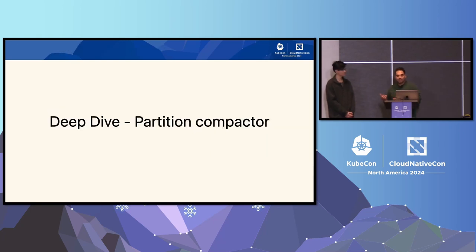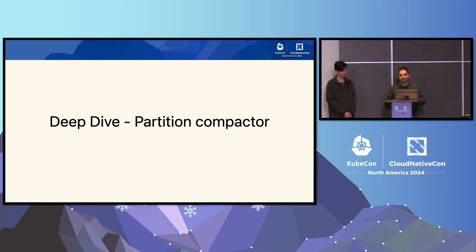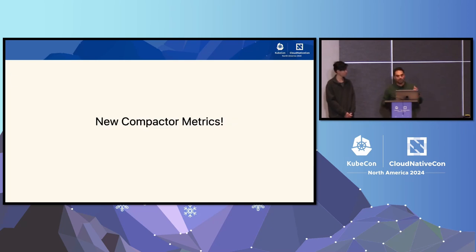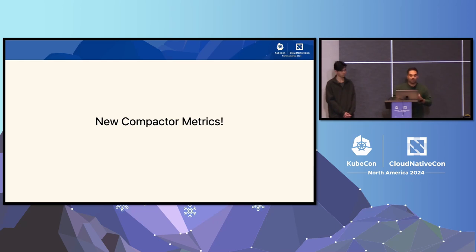So that's how the partition compactor was made: with the partition information in the metafile, the power-of-two partition count, and the changes in the grouper and visit marker. One benefit that emerged while doing this work was improved observability, since the community had complained that it was very hard to debug what's happening in Cortex — you couldn't see what had been compacted or how much was left to compact.